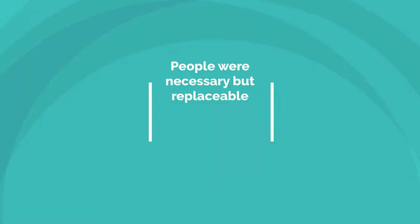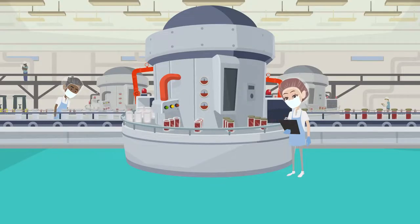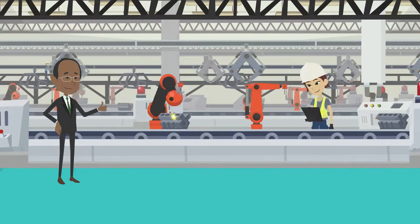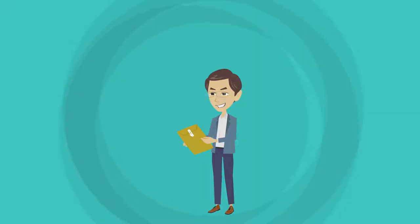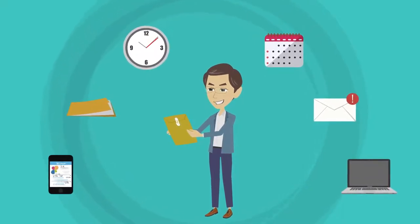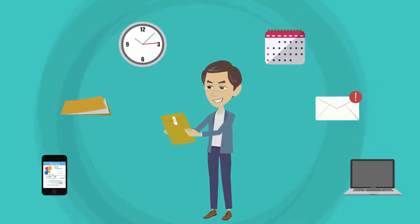People were necessary but replaceable. They were reduced to a thing. Many of our modern management practices come from the industrial age, which gave us the belief that you have to control and manage people. It gave leaders the industrial age control model to knowledge workers. They manage people as they do things.